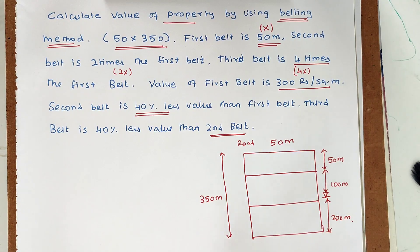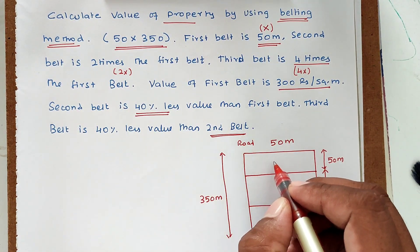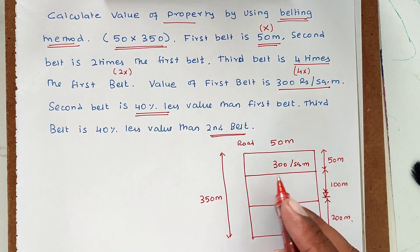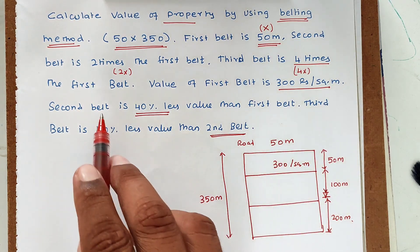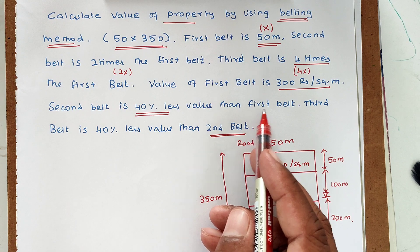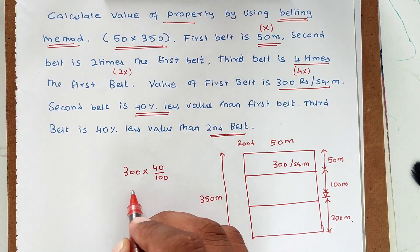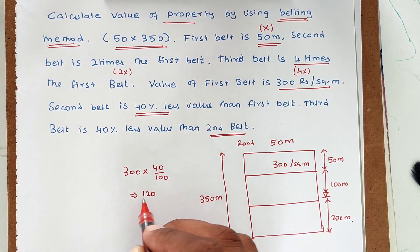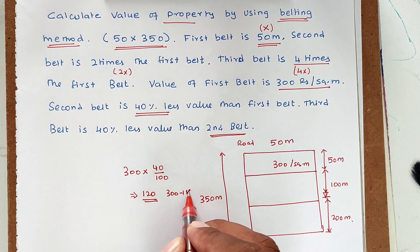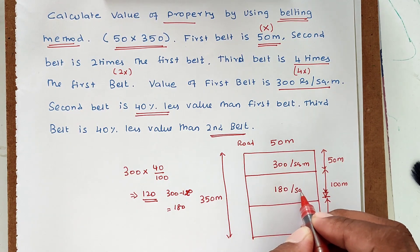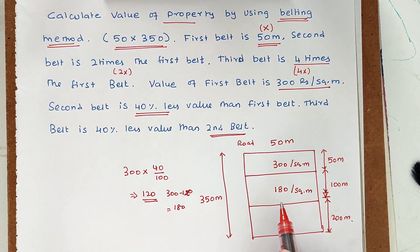The value of the first belt is 300 rupees per square meter, as given. The second belt value is 40% less than the first belt: 300 into 40 divided by 100 equals 120. So 300 minus 120 equals 180 rupees per square meter — that is the value of the second belt.